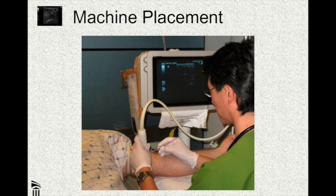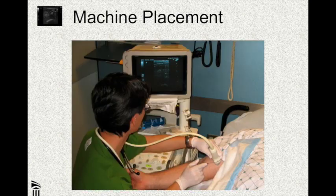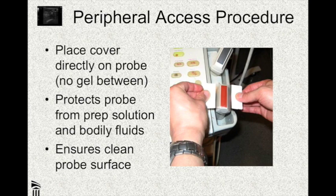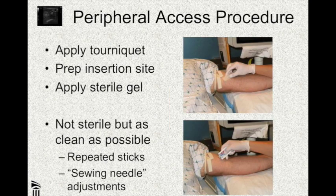If you're right-handed, attempt this on the patient's left arm — that way you can put the machine straight in front of you and everything feels more natural. If forced to use the other arm, you end up having to look over your shoulder at the machine. If you're left-handed, try for the patient's right arm. You're going to put a Tegaderm directly over the probe to maintain a clean working surface and protect it from blood. Don't put gel on the probe first because you'll never make the Tegaderm stick. Apply the tourniquet, prep out the site, and apply sterile gel. This is not strictly a sterile procedure, but you're plunging the needle through the gel into the blood vessel, so you want it as clean as possible.